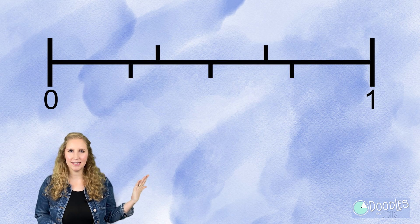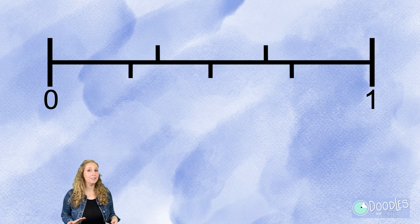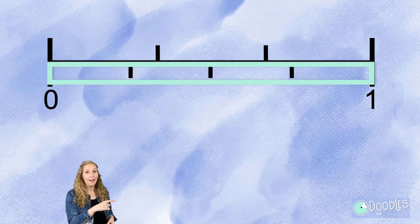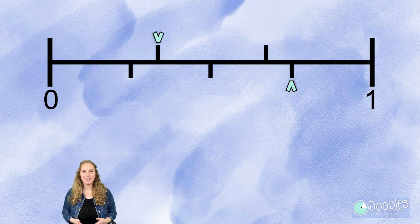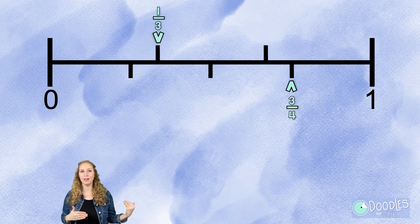A number line is another great tool to compare fractions. Let's look at a number line. You might notice that there's actually a different fraction being shown on the top of the number line than the bottom of the number line. What two fractions are being shown? So when we compare fractions, we can actually place both fractions on this same number line to compare them.